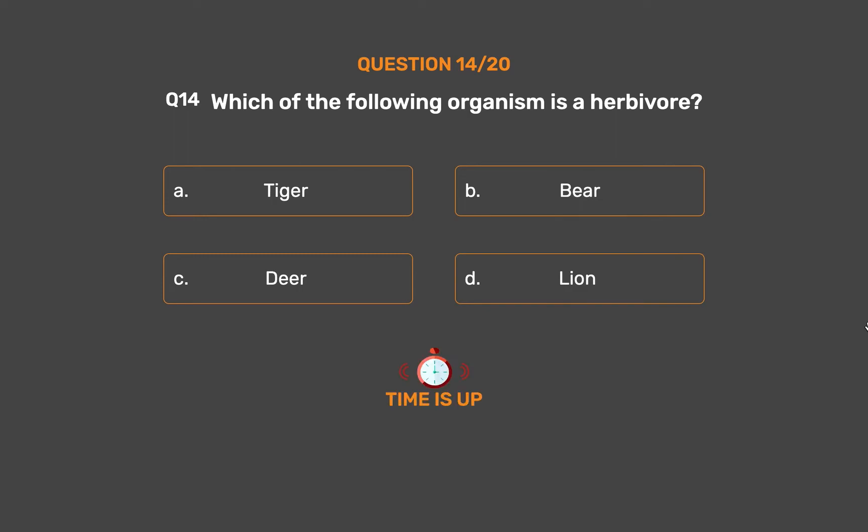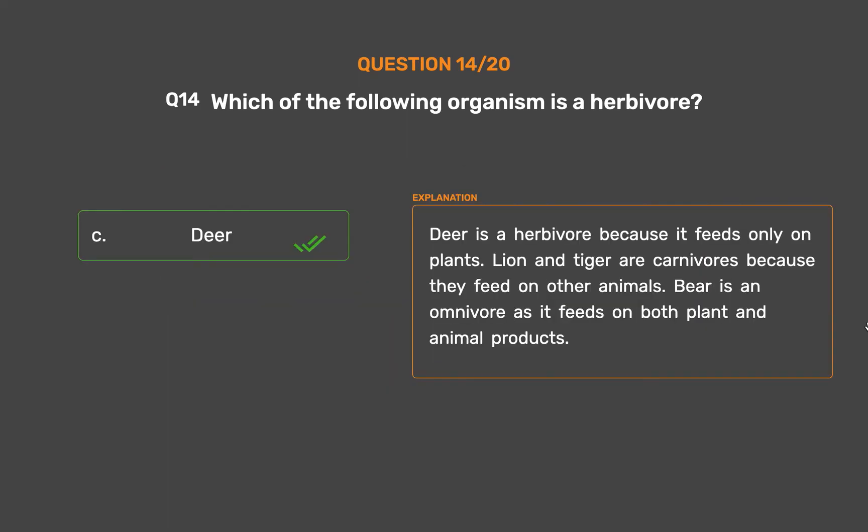The correct answer is Option C, Deer. Deer is a herbivore because it feeds only on plants. Lion and tiger are carnivores because they feed on other animals. Bear is an omnivore as it feeds on both plant and animal products.